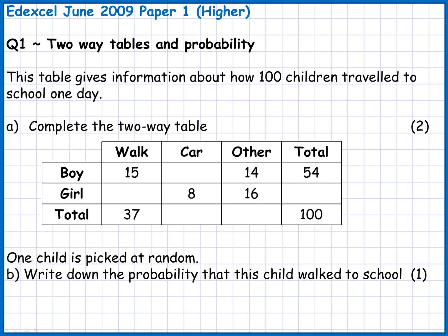Question 1. We've got a table that gives information about how 100 children travel to school one day, and for part A we've got to complete the two-way table. It's called a two-way table because the information about the 100 children has been split in two different ways.